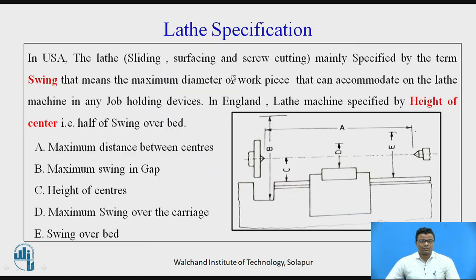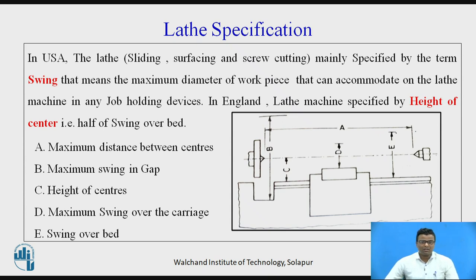Now let's look at specifications — meaning dimensions and parameters. In some countries like the United States of America, the lathe is specified by the swing, which is the maximum diameter that can be accommodated by the machine. The type of lathe is called sliding, surfacing, and screw cutting. In England, the lathe machine is specified by the height of the centre, which is half of the swing over the bed.